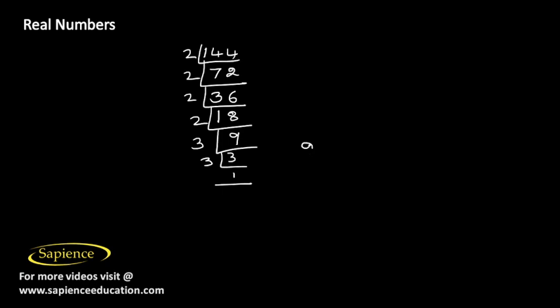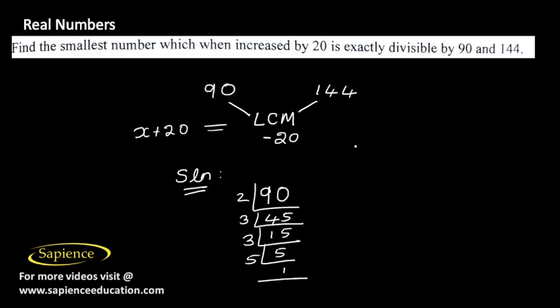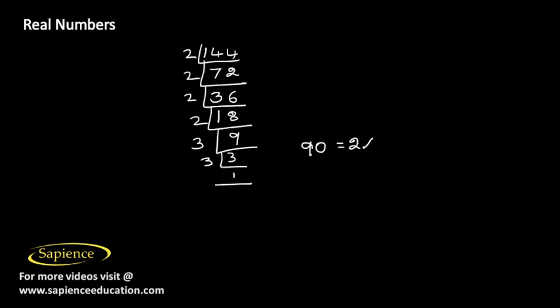So 90 can be written as 2 × 3² × 5, and 144 can be written as 2⁴ × 3².